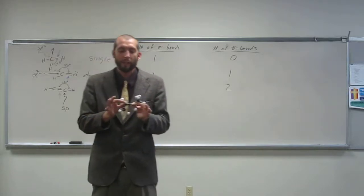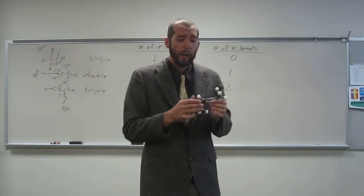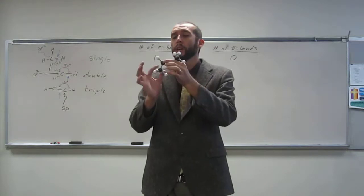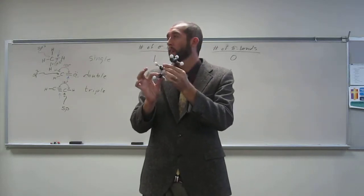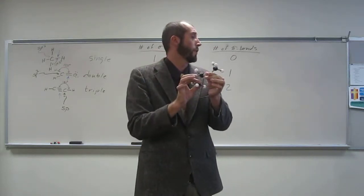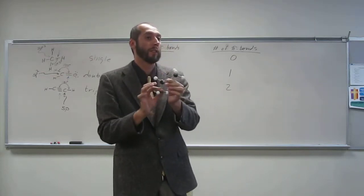We call these things alkenes, these things with double bonds. When the big groups are opposite of each other, that's trans, or E.